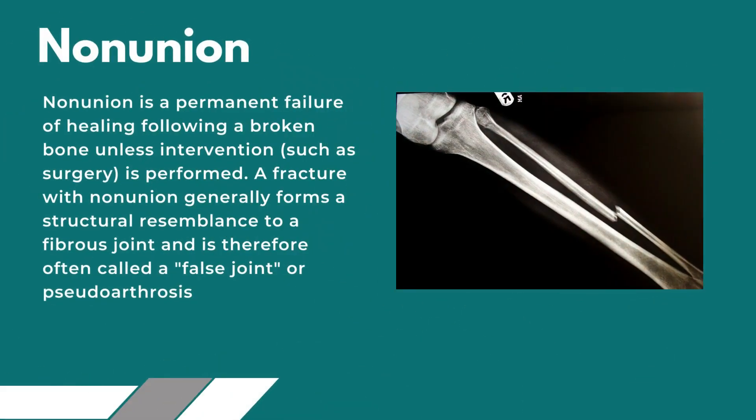Non-union: Non-union is a permanent failure of healing following a broken bone unless intervention, such as surgery, is performed. A fracture with non-union generally forms a structural resemblance to a fibrous joint and is therefore often called a false joint or pseudarthrosis.